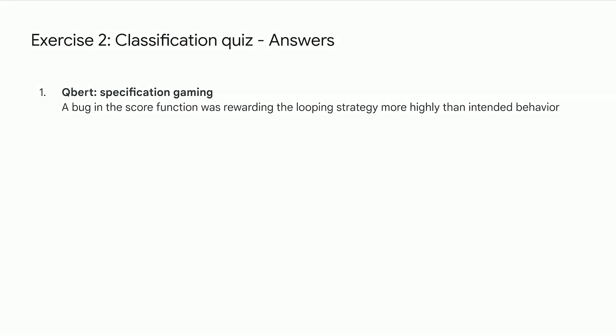For Qbert, this is a specification gaming example, because there was a bug in the score function that was rewarding this looping strategy more highly than the intended behavior.